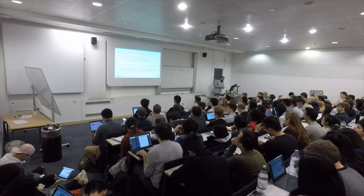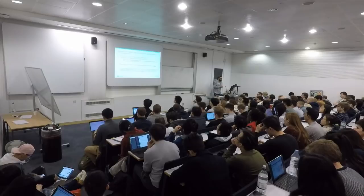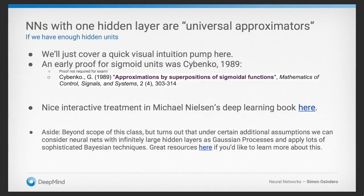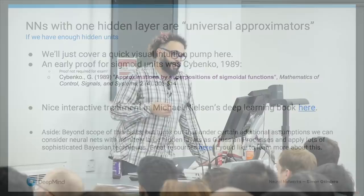Now I'm going to go through what I'd call a visual intuition pump for why neural networks with just one hidden layer can still be viewed as universal function approximators — with a large enough network, we can approximate any function. This idea was arrived at by several people more or less concurrently. One well-known proof was by Cybenko from 1989. There are also nice interactive web demos, one in Michael Nielsen's web book on deep learning, that I'd recommend. There are also interesting links to be made between neural networks and Gaussian processes, though we won't cover that today.